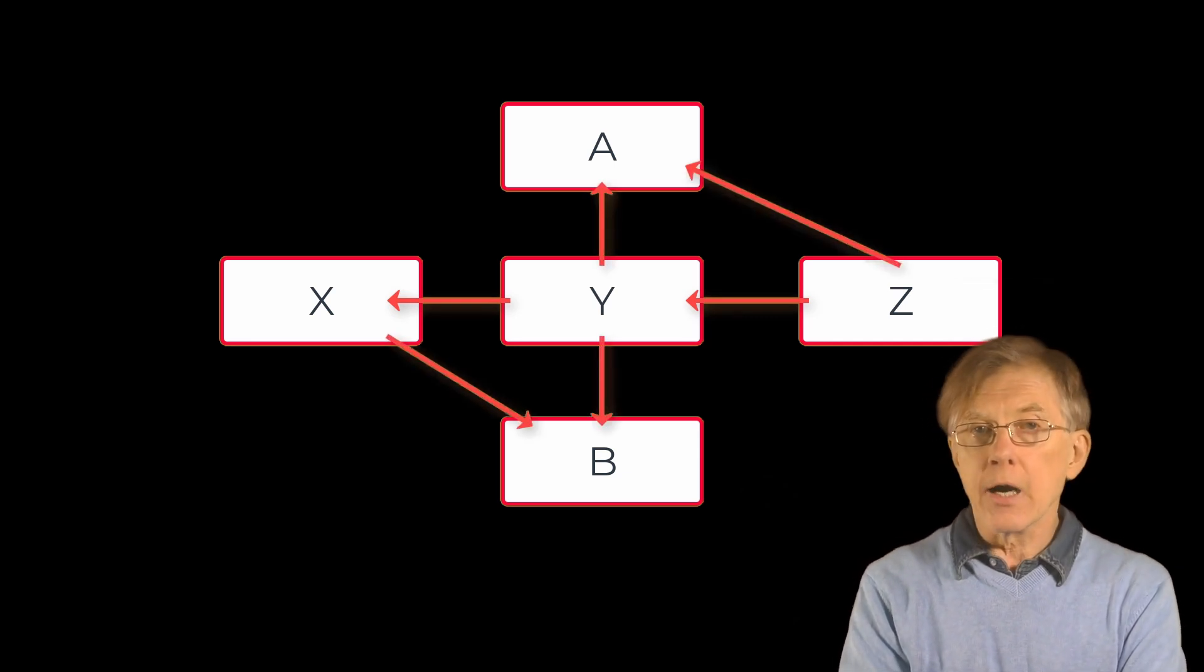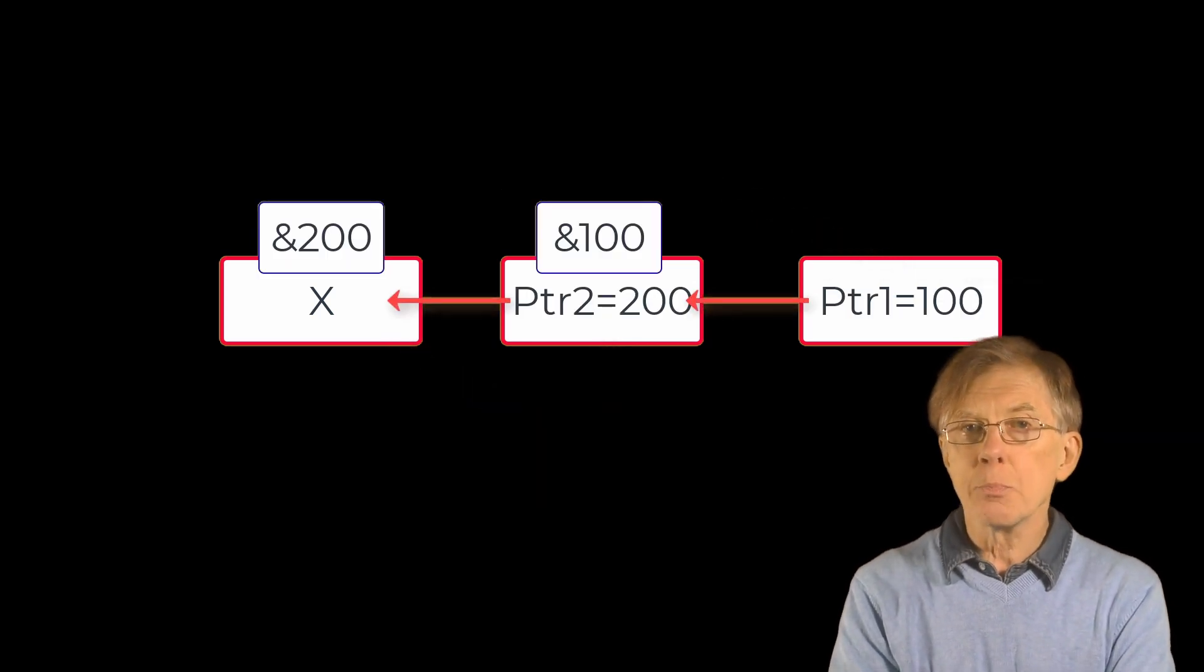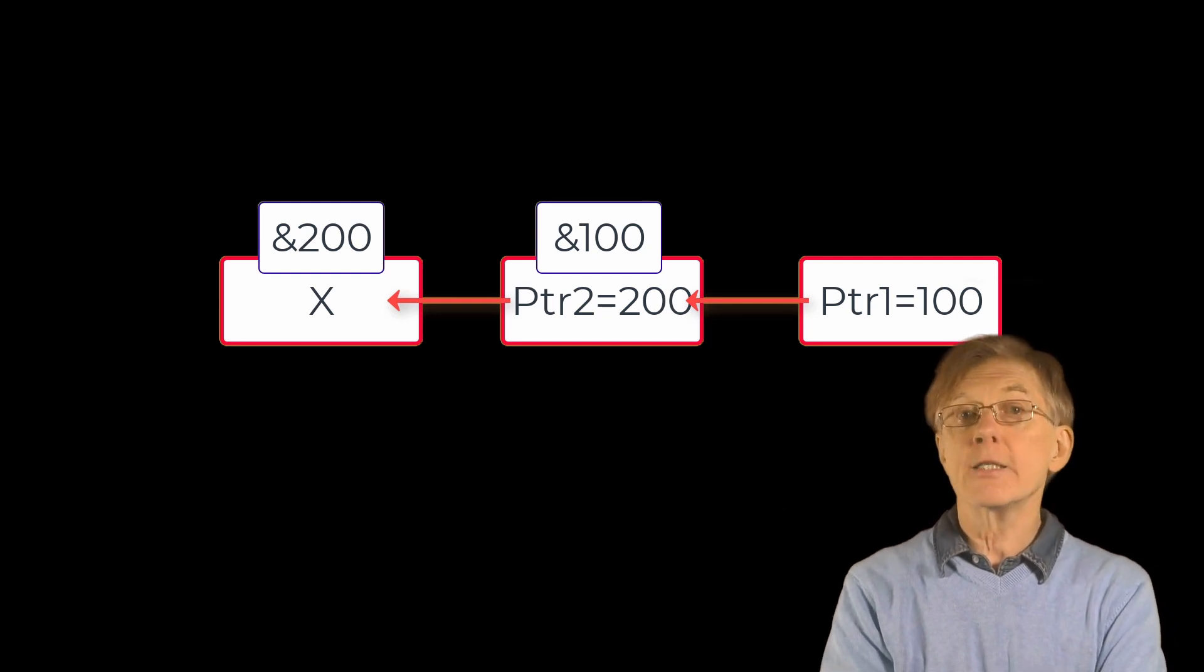Remember, though, that the arrows are just a graphical representation. What is really happening is that each pointer variable stores a number, the address of the thing to which it points.